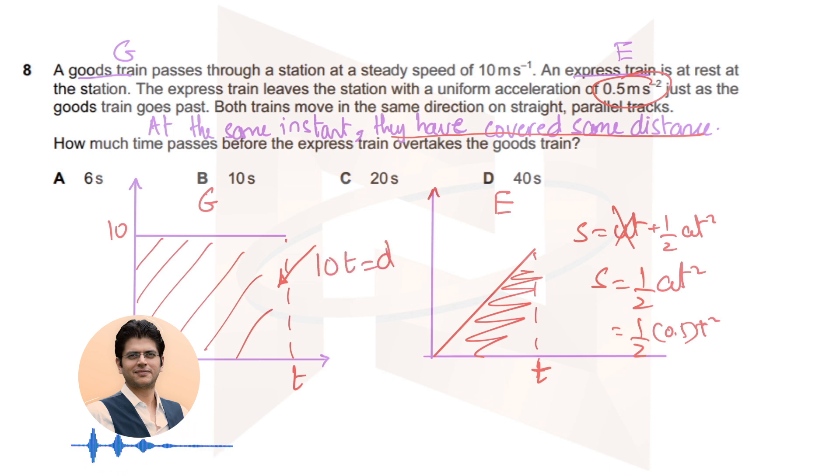And they have covered the same distance because they're overtaking each other. So 10t must equal 0.5 into 0.5t squared. Cancel out t, or take the square of 10 divided by 0.5, and the time that you get is 40 seconds.